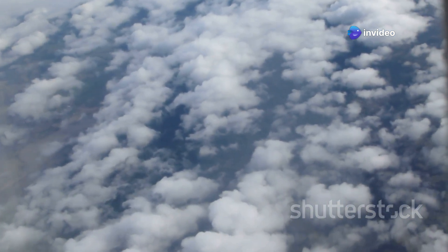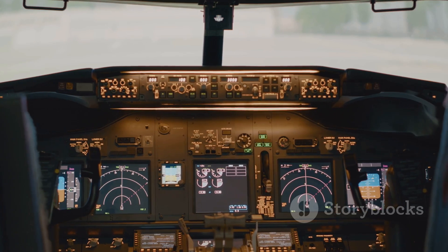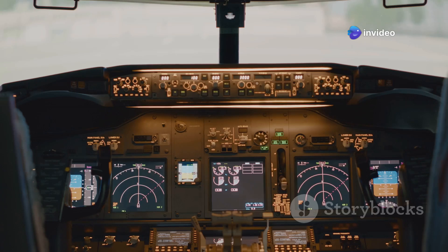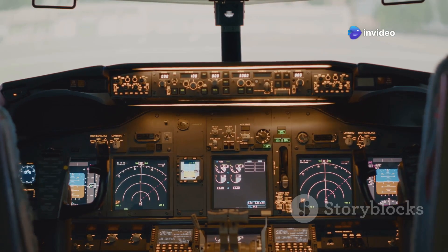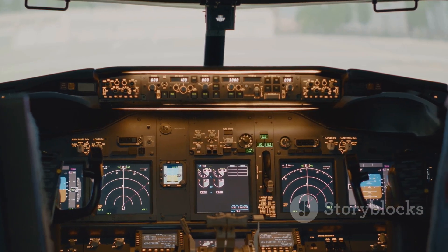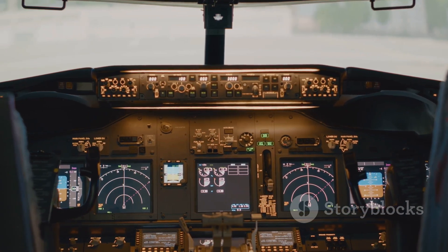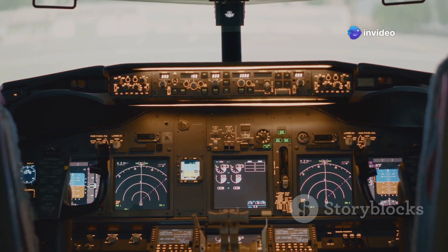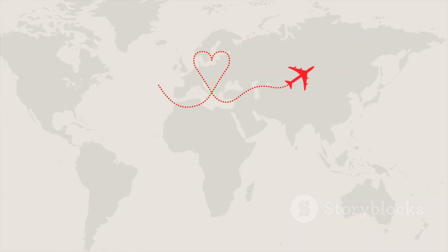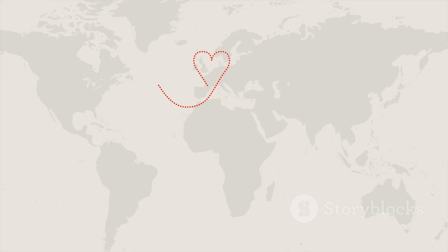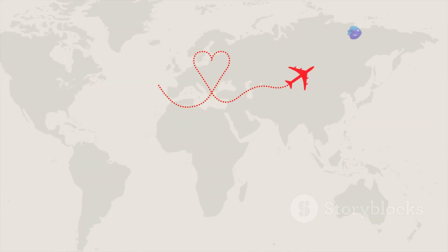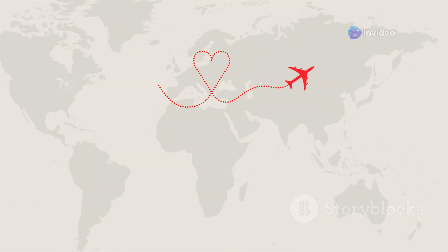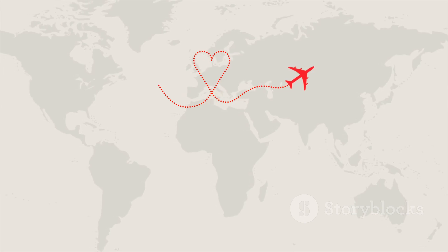The world of aviation is a fascinating blend of science, technology, and human ingenuity — from the early days of the Wright brothers to today's advanced jets that can travel halfway around the globe in hours. Understanding why planes don't fly straight across the Pacific Ocean provides a glimpse into the intricate factors that shape air travel. The great circle route — the shortest path between two points on a sphere — is a fundamental principle in aviation, often appearing curved on a flat map but representing the most efficient way to travel long distances.